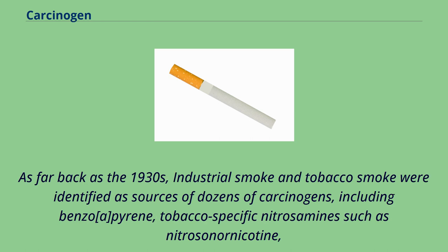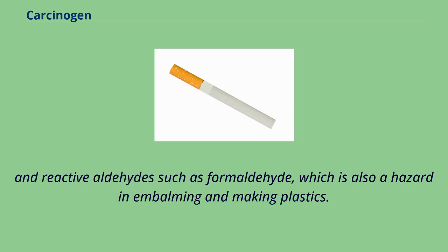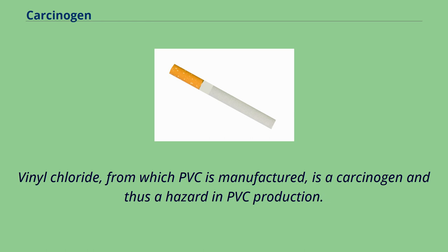As far back as the 1930s, industrial smoke and tobacco smoke were identified as sources of dozens of carcinogens, including benzo[a]pyrene, tobacco-specific nitrosamines such as nitrosonornicotine, and reactive aldehydes such as formaldehyde, which is also a hazard in embalming and making plastics. Vinyl chloride, from which PVC is manufactured, is a carcinogen and thus a hazard in PVC production.